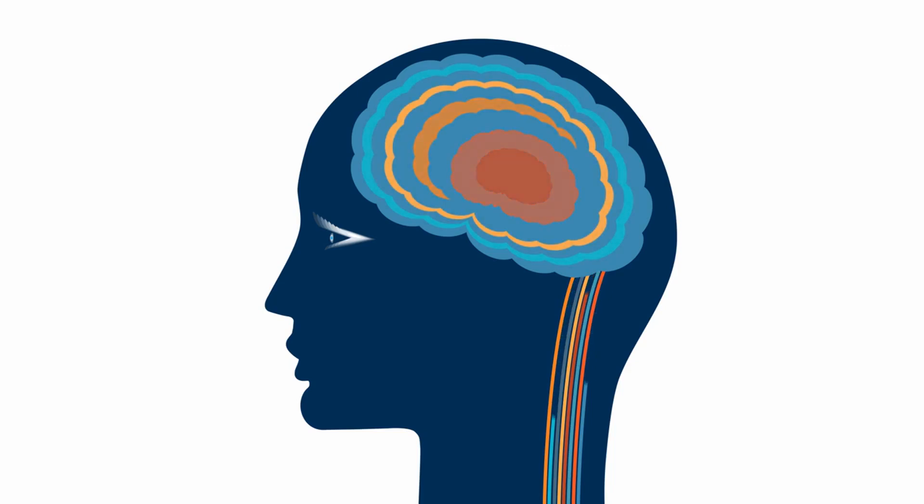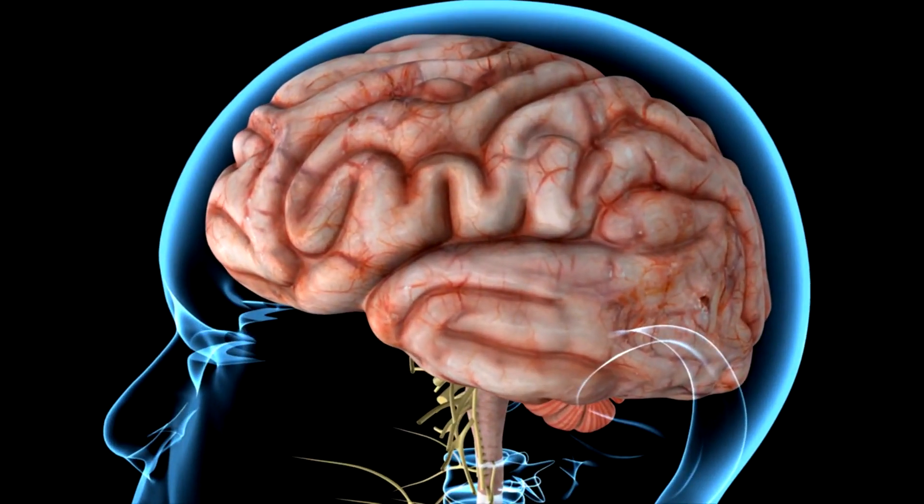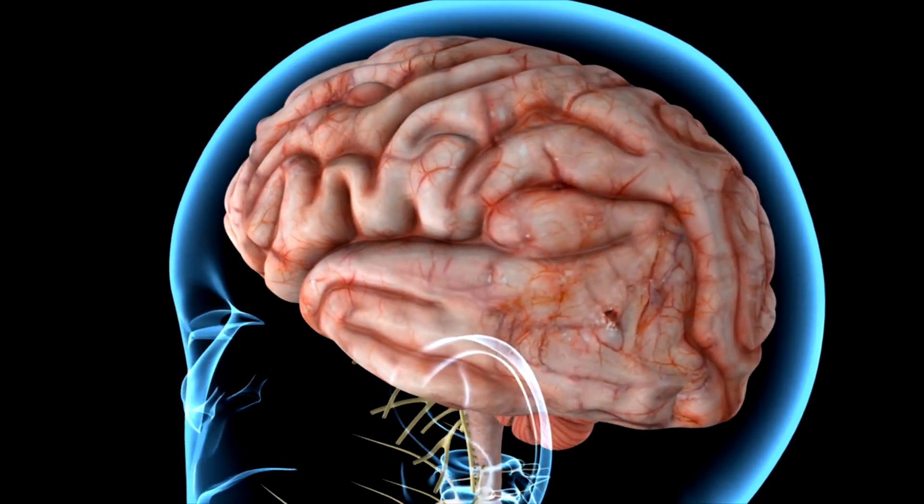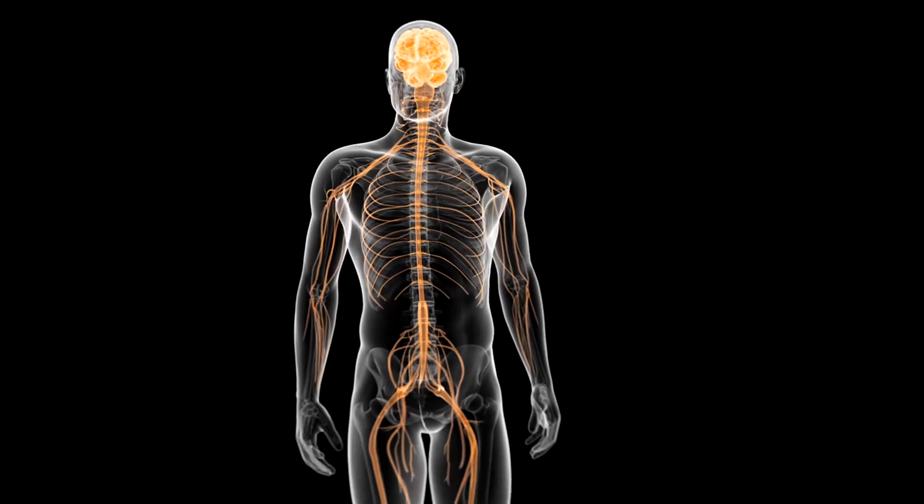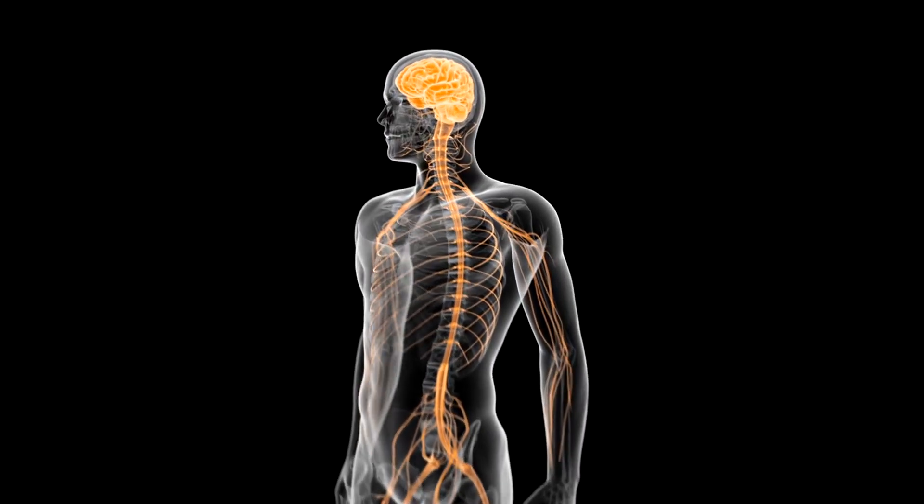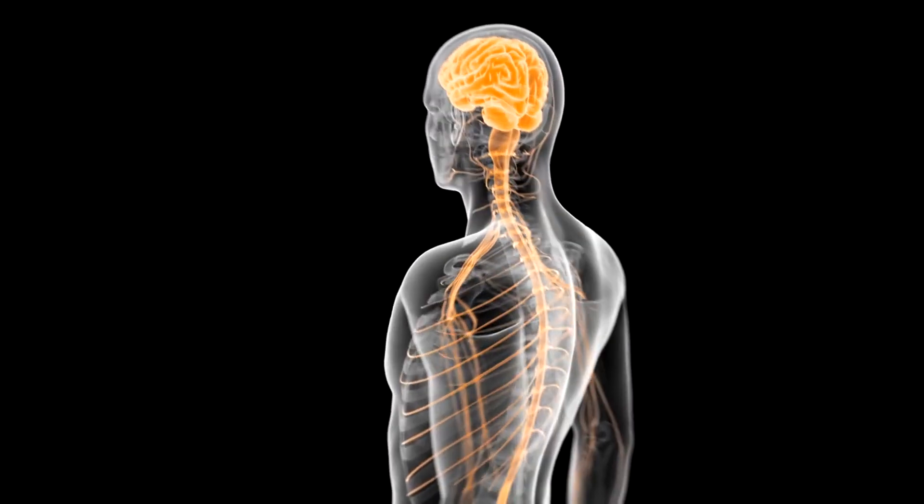The brainstem, situated at the base of the brain, controls basic life functions like breathing, heartbeat, and blood pressure. It's divided into three parts: the midbrain, pons, and medulla oblongata. The brainstem also acts as a relay station, sending messages between the brain and the rest of the body.